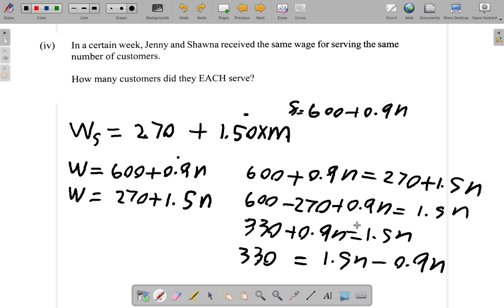Let me try and use the space up here. I've run out of space down here. So if I rewrite or continue what I have here, 330 equals 0.6N.